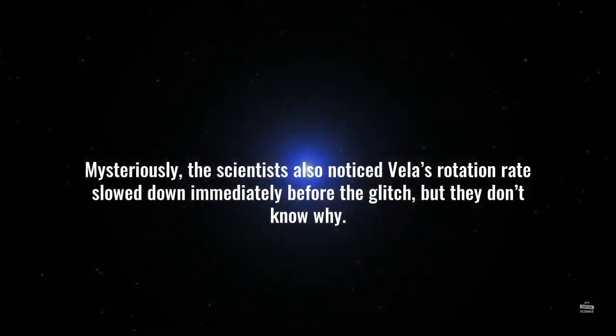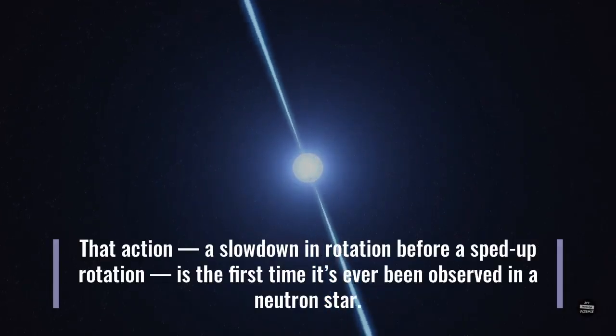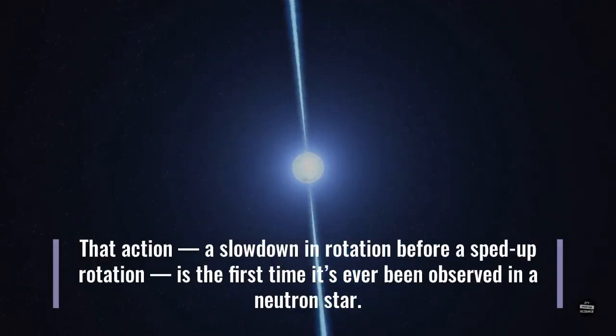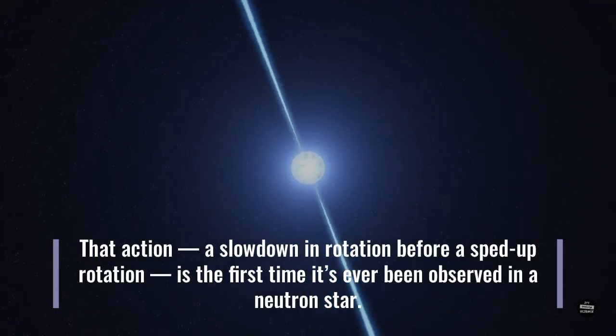Mysteriously, the scientists also noticed Vila's rotation rate slowed down immediately before the glitch, but they don't know why. That action, a slowdown in rotation before a sped-up rotation, is the first time it's ever been observed in a neutron star.